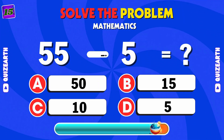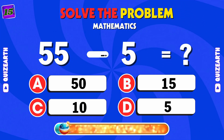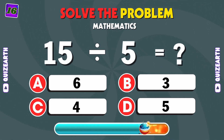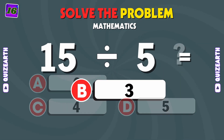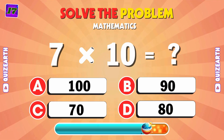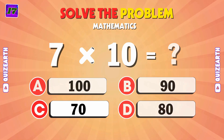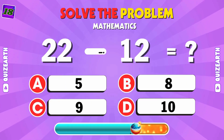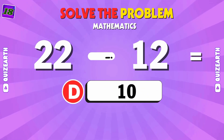Subtraction alert. What is 55 minus 5? A: 50. Divided up. What is 15 divided by 5? 3. What's 7 times 10? C: 70. 22 minus 12 — what do you get? D: 10.